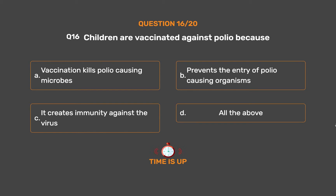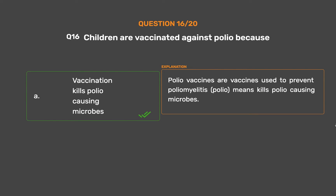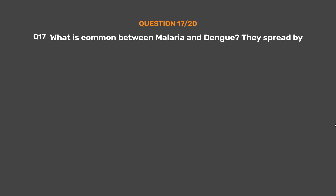The correct answer is Option A: Vaccination kills polio-causing microbes. Polio vaccines are vaccines used to prevent poliomyelitis — meaning it kills polio-causing microbes.